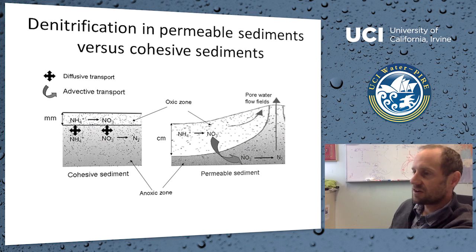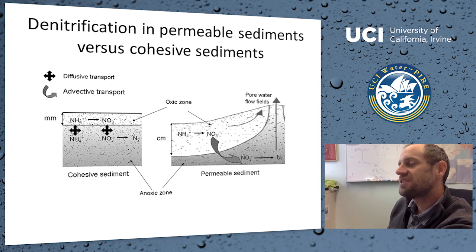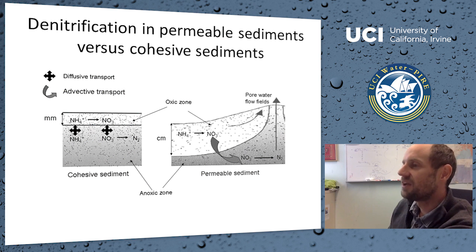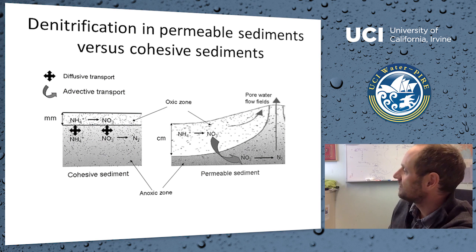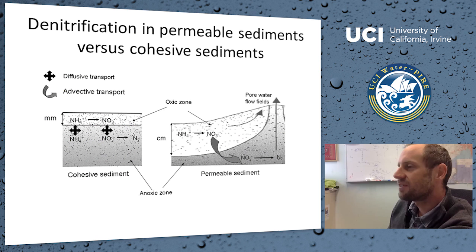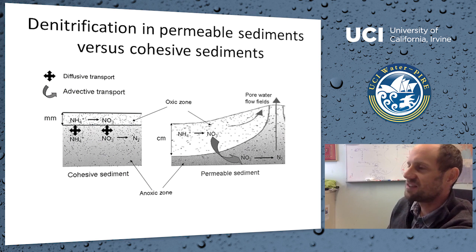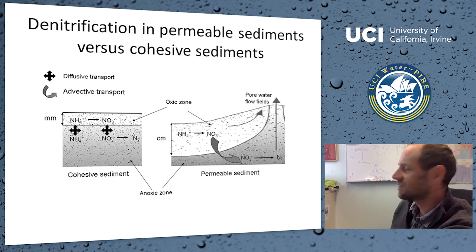In permeable sediments, advection changes the situation: we have a larger, thicker oxic zone where nitrogen can be oxidized to nitrate, and the nitrate can then be pumped down into the anoxic zone where it's denitrified. Initially we thought permeable sediments would be a massive sink for nitrogen — this big oxic layer would generate huge nitrification, and advection would pump all that nitrate into the anoxic zone to be denitrified. We thought it would be very exciting and show huge denitrification rates.